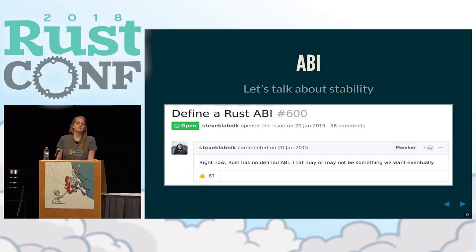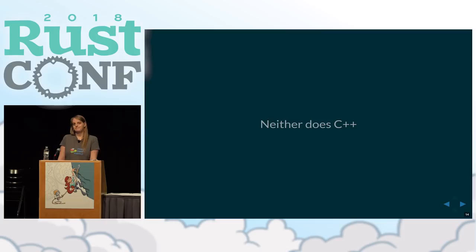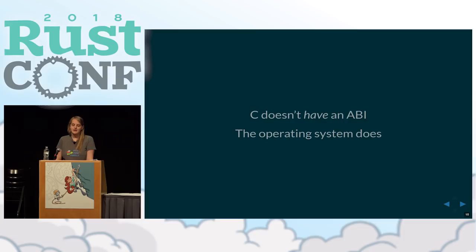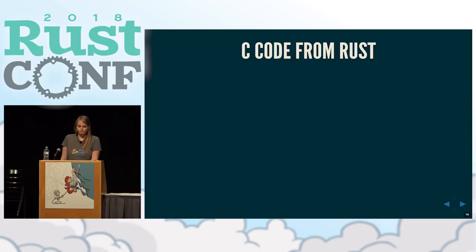Rust doesn't have a stable ABI. When Rust was made stable in 2015, that was a promise that code you wrote one day would still work later. That promise extends to the language itself — syntactic features and the standard library — but it does not extend to the ABI. There is an issue by Steve Klabnik, number 600, that Rust might want to define an ABI at some point. As for C++, there isn't one standardized C++ ABI — it always depends on the compiler. And technically, there is no single 'C ABI' either; what we mean is whatever the platform we're building on defines.